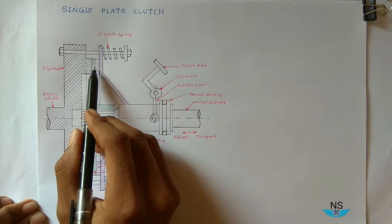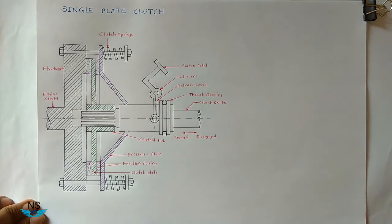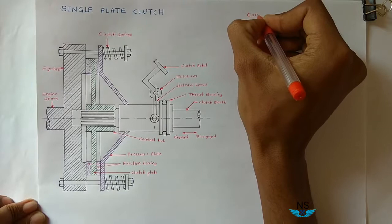Now this is the schematic diagram of single plate clutch. Let us see the construction of this single plate clutch.